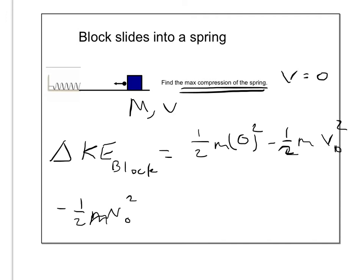And where does that work come from? That change in kinetic energy comes from work, which is the work done by the spring, which is negative 1 half kx squared.